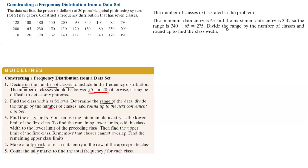So the question says construct a frequency table with seven classes. This information is already given to us. To find the range of the data, the minimum value in our collection is 65, the maximum value is 340, so the range is 275.